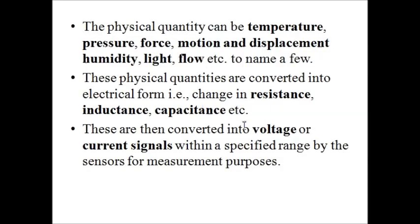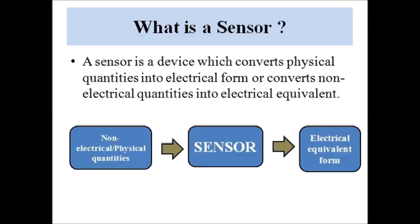These physical quantities are converted into electrical form, meaning voltage or current signals. Whenever we interface a sensor with any sort of device such as a computer, a microprocessor, or a microcontroller, we need electrical signals — it cannot interpret physical signals. So we need to convert these physical quantities into electrical form so that they can be interfaced with a microcontroller or microprocessor for further analysis.